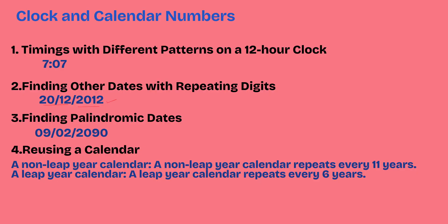Finding palindromic dates: 09/02 — reading 02 in reverse gives 20, and reading 09 in reverse gives 90. So this is a kind of palindromic date. Regarding reusing calendars: a non-leap-year calendar repeats every 11 years, and a leap-year calendar repeats every 6 years. These are patterns we use with daily life numbers.